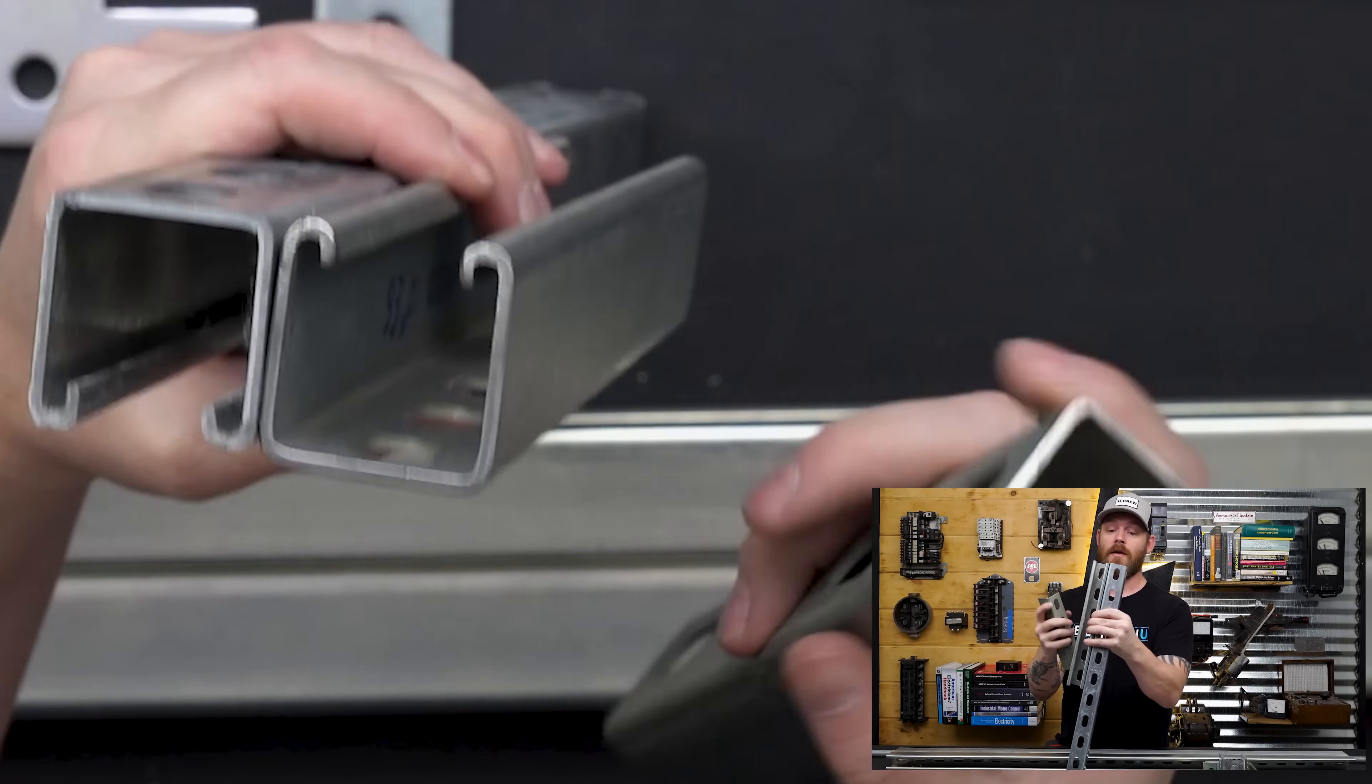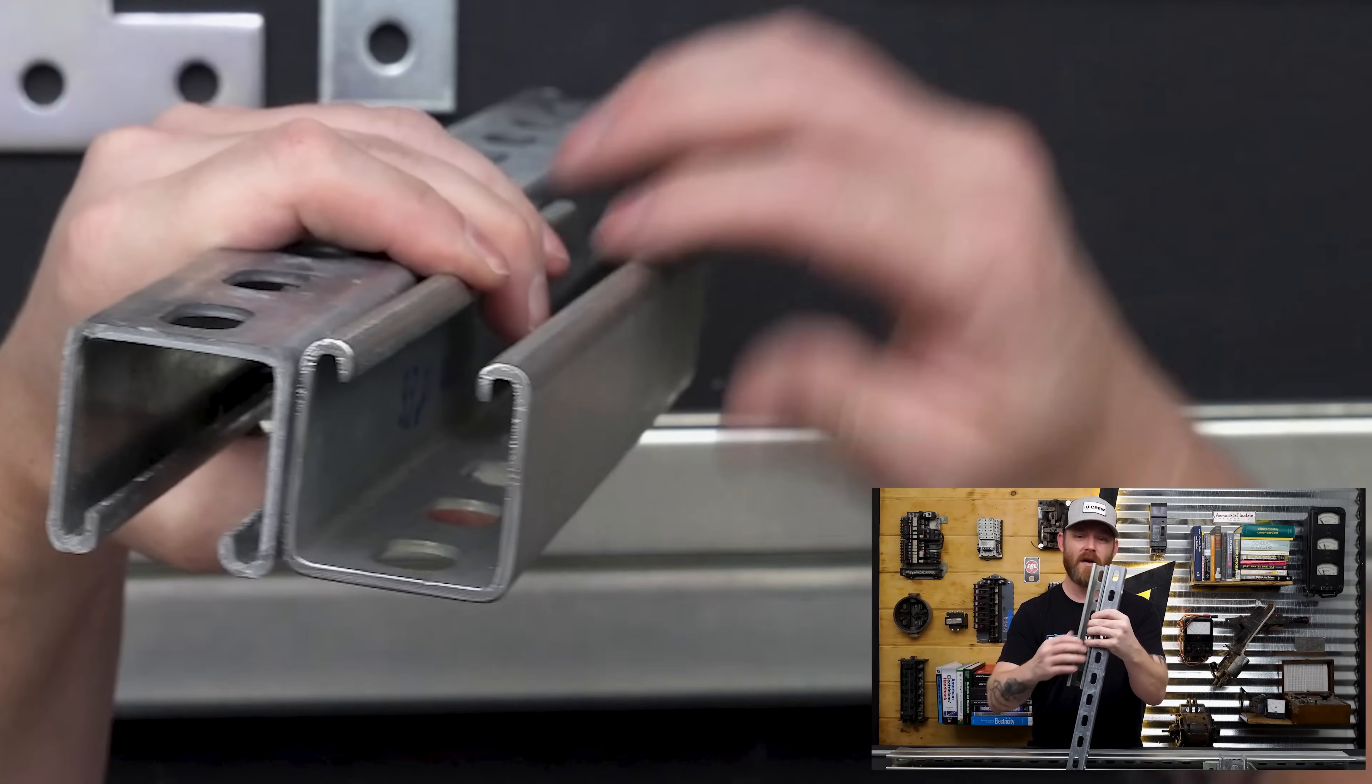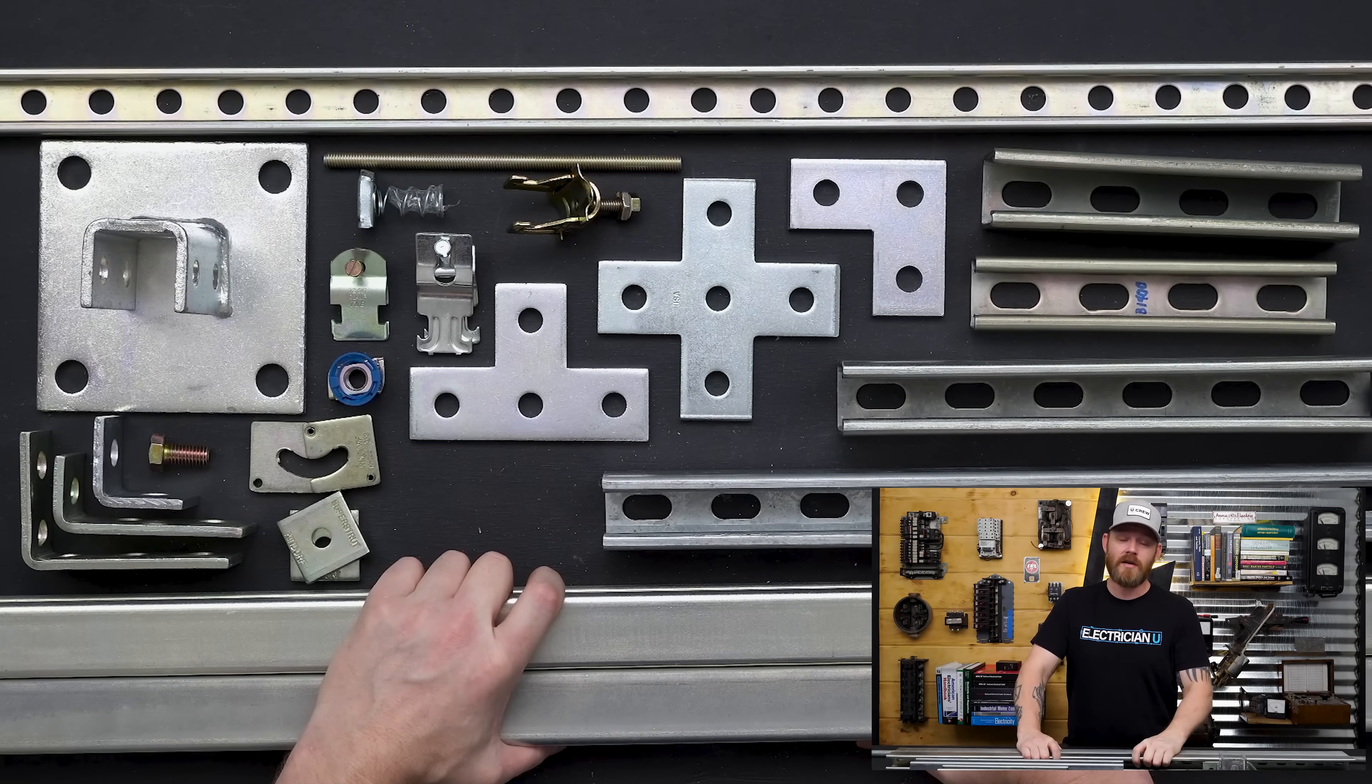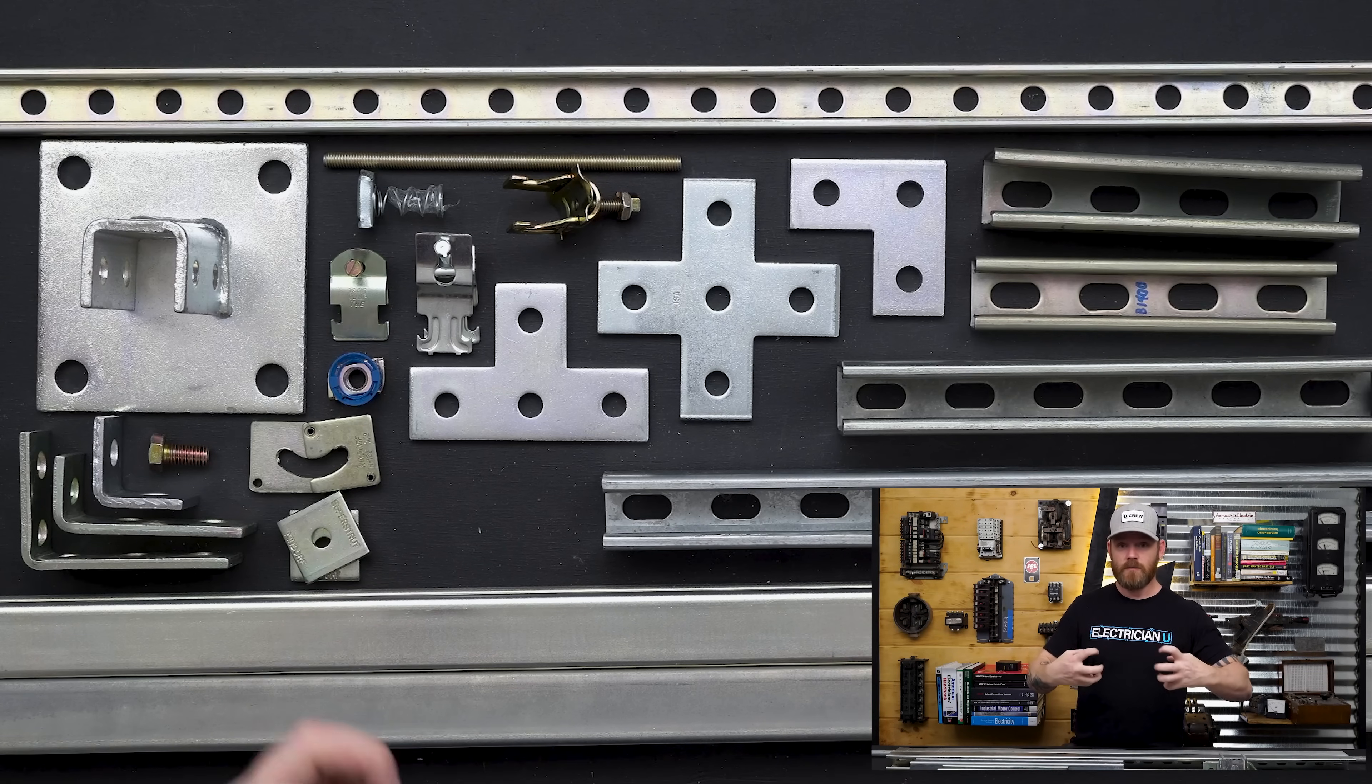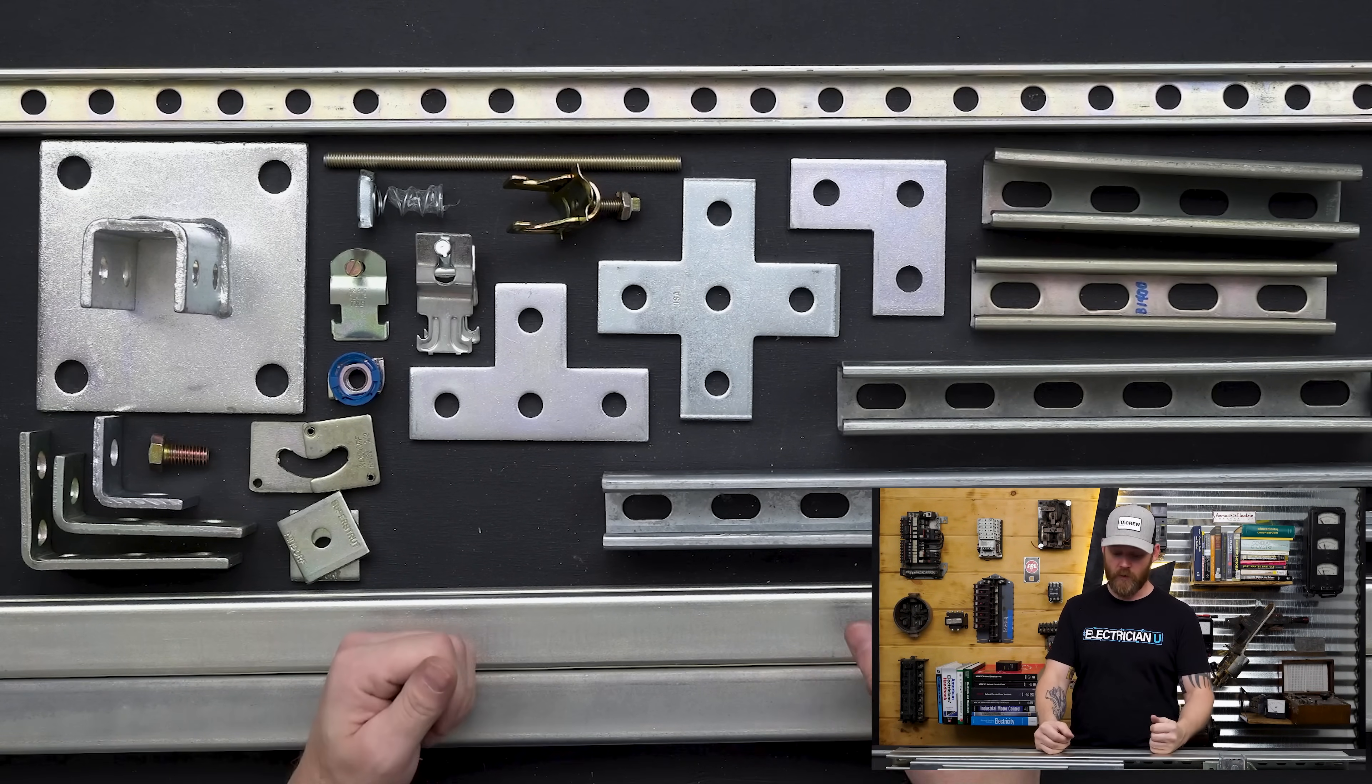The reason that you want the back to back side to side, all of that is just because you're looking for like stout rigidity. Some people are putting insanely heavy things mounted to other things. So having a little bit more sturdy material back to back just makes this whole structure much more rigid.